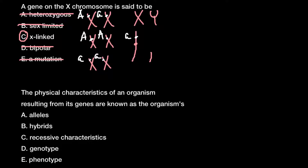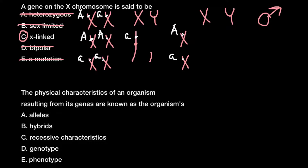Here is an example. Imagine a phenotypically normal male whose genotype is XY. We also have a female who is heterozygous for this genetic disorder but phenotypically normal, because the disorder is recessive. When a female has one dominant allele and one recessive allele, she will not express the disorder. The male is also phenotypically normal, having the dominant allele on his X chromosome.